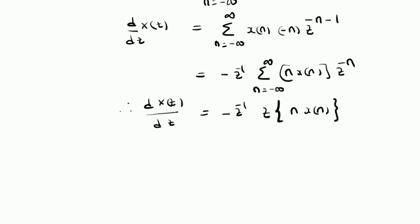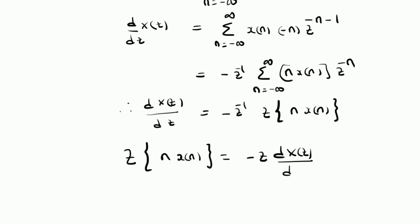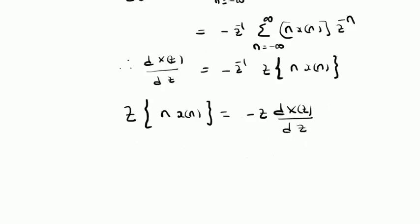Therefore, the derivative of X of Z with respect to Z is equal to minus Z inverse times the Z transform of n times X of n. Therefore, the Z transform of n times X of n is clearly given by minus Z times the derivative of X of Z, where X of Z is the Z transform of X of n. This completes the proof of the differentiation property.